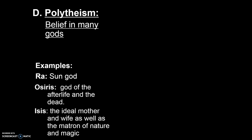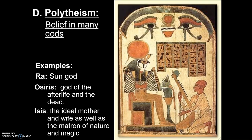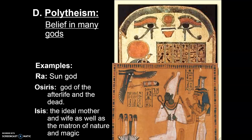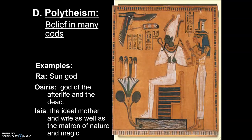The Egyptians were polytheistic, meaning they believed in many gods. For example, Ra, the sun god; Osiris, the god of the afterlife and of the dead — people would be sailed across the River Styx into the underworld; and Isis, the ideal mother and wife, the matron. There were many, many gods in ancient Egypt.